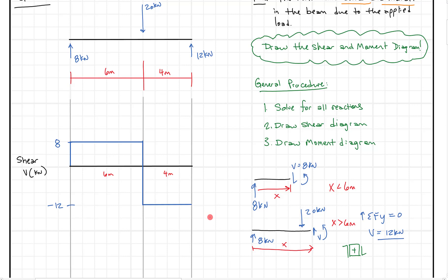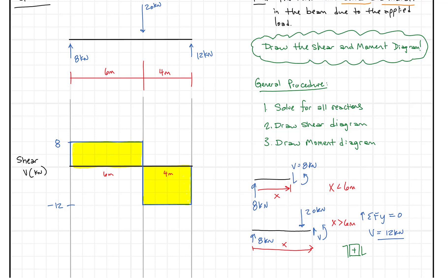We're down at minus 12. At the right support, the 12 kilonewton reaction brings us back up to zero — which is exactly what we want to see. That closes the shear diagram. I like to shade it in to make it a little cleaner. That's our complete shear diagram.